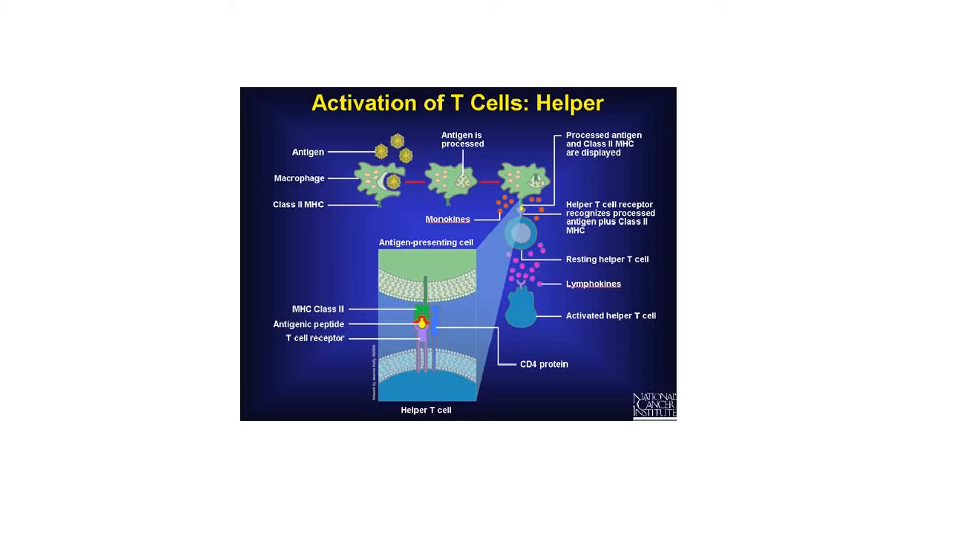We need to find a match between antigen presenting cell, epitope and MHC class II, and inactive helper T cell, T cell receptor, and CD4 coreceptor. Once this match happens, then intercellular signals or cytokines, they're also known as lymphokines, will be released, and this helper T cell that was inactive will become active.